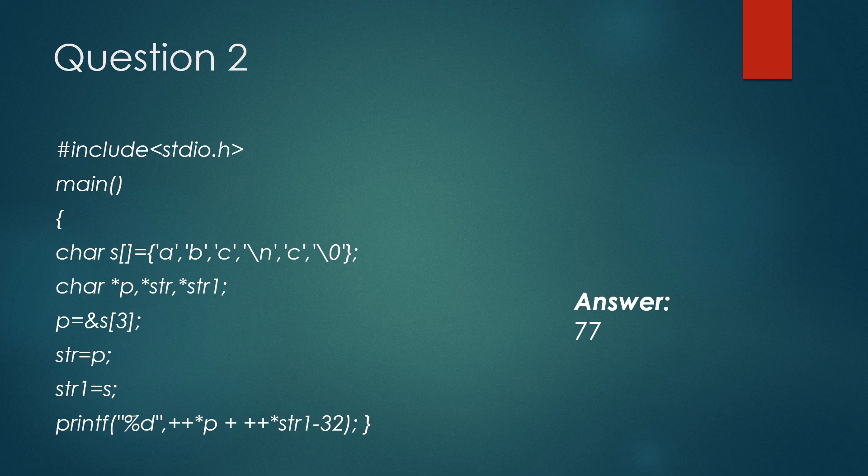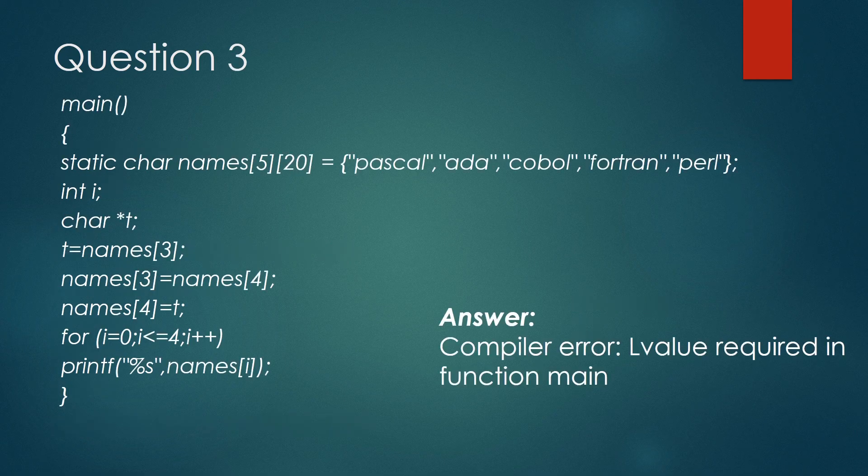So it becomes b, and the ASCII value of b is 98. Finally, inside the printf statement, if we evaluate this expression like ++(*P) that is 11, plus ++(*str1) that is 98 minus 32, we will get 77. So the final output will be 77 and it represents the character n.